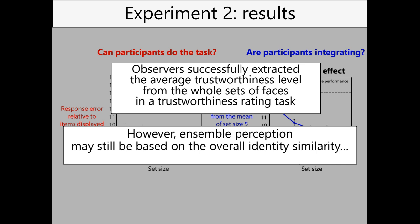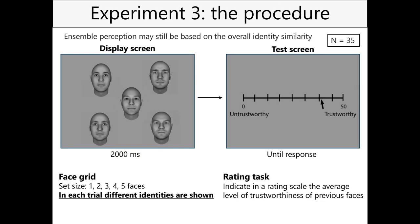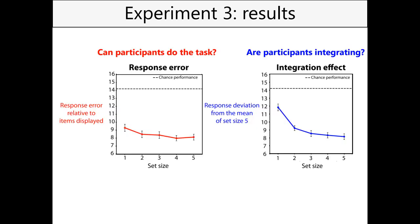We then ran a third experiment, because in Experiments 1 and 2 we showed groups of faces from the same identity morph continuum - so one could argue the ensemble perception effect could be based on overall identity similarity. For this reason, in Experiment 3 different identities were shown on each trial, with faces varying in both trustworthiness level and identity. The task was the same rating task, and we still found similar results: participants were able to do the task and showed an integration effect.